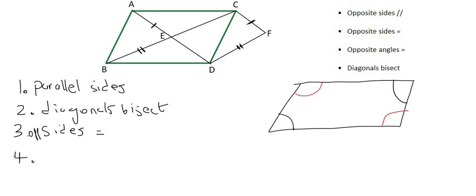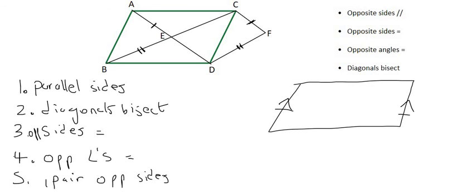The fourth way is to show that all opposite angles are equal, so opposite angles are equal. And the last way is to prove that the opposite sides, just one pair, is equal and parallel. So one pair, opposite sides are equal and parallel.